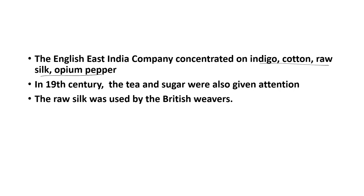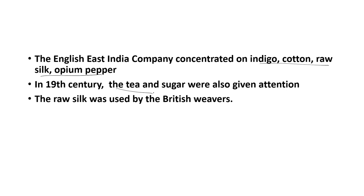The English East India Company concentrated on the production of indigo, cotton, raw silk, opium and pepper. Indigo, cotton and raw silk were required for meeting their industrial needs. These were the raw materials which were extensively cultivated in India and exported from India to Britain. In the middle of the 19th century, tea and sugar were also given attention by the British. Initially they exported silk, cotton and indigo from India to Britain as raw materials for their industrial needs.